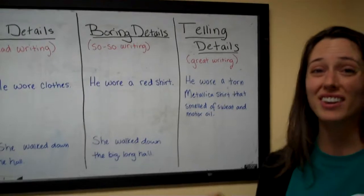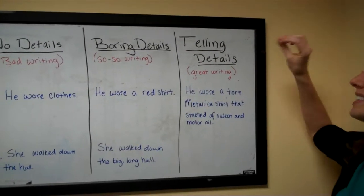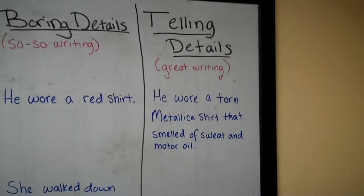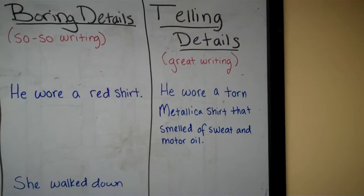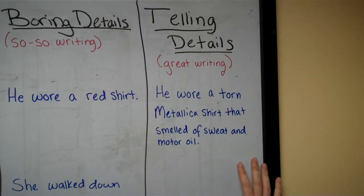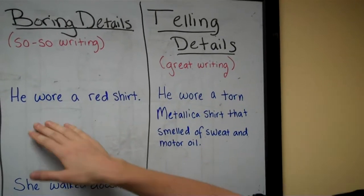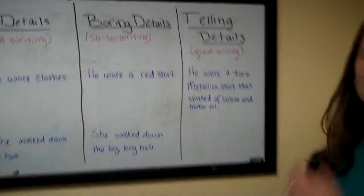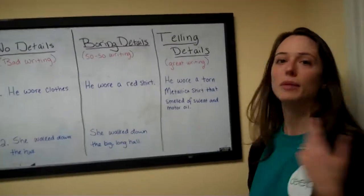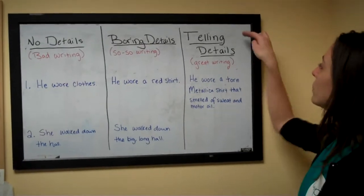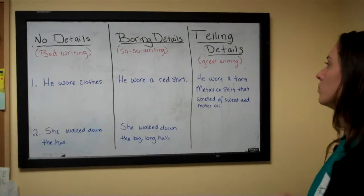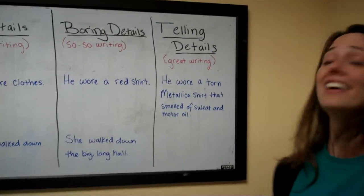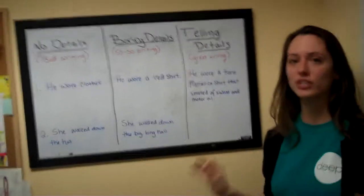What we really want our kids to do is write with telling details. A telling detail tells you a whole lot more than just what it says. A boring detail like 'he wore a red shirt' just tells you he wore a red shirt. But a telling detail like 'he wore a torn Metallica shirt that smelled of sweat and motor oil' tells you a whole lot more than just what it is.